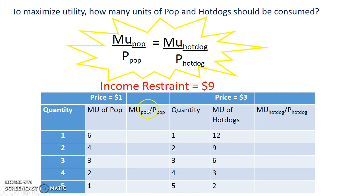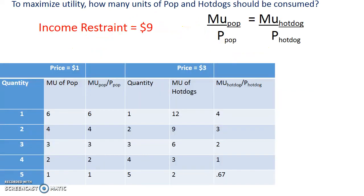What's been done here is adding a column for marginal utility per dollar of pop and marginal utility per dollar of hot dog. You might want to pause the screencast to fill in your chart. Once filled in, you can see that marginal utility per dollar of pop, because they're divided by one, will be the same as the original marginal utilities of pop.